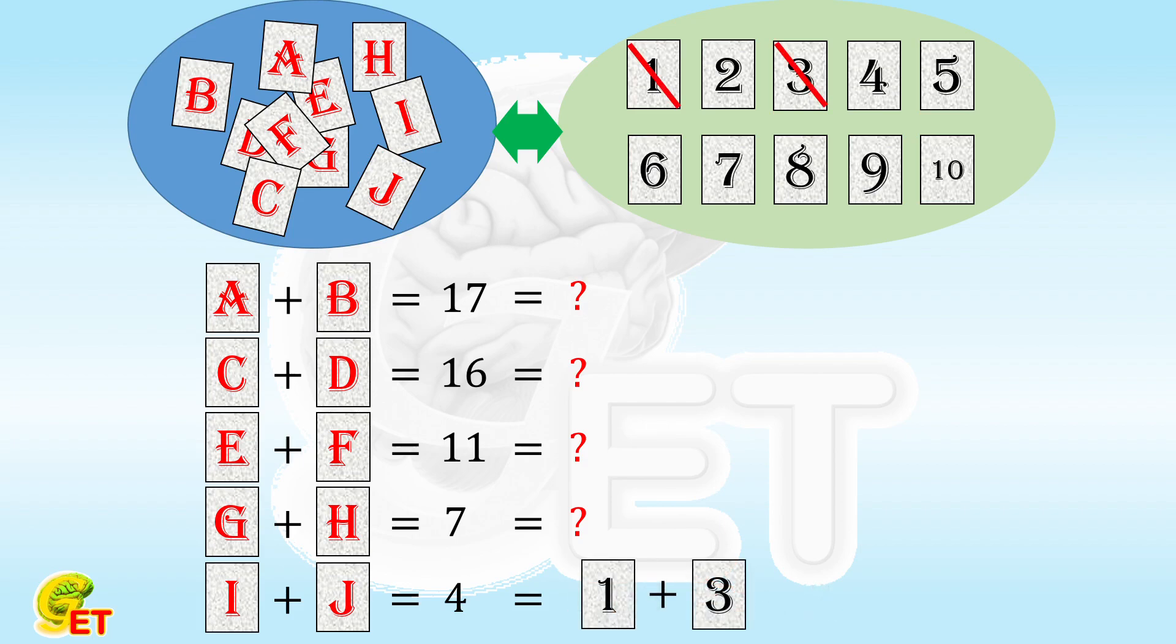7 could be 1 plus 6, 2 plus 5, or 3 plus 4. But both 1 and 3 are already used, so the only possibility left is 2 plus 5.